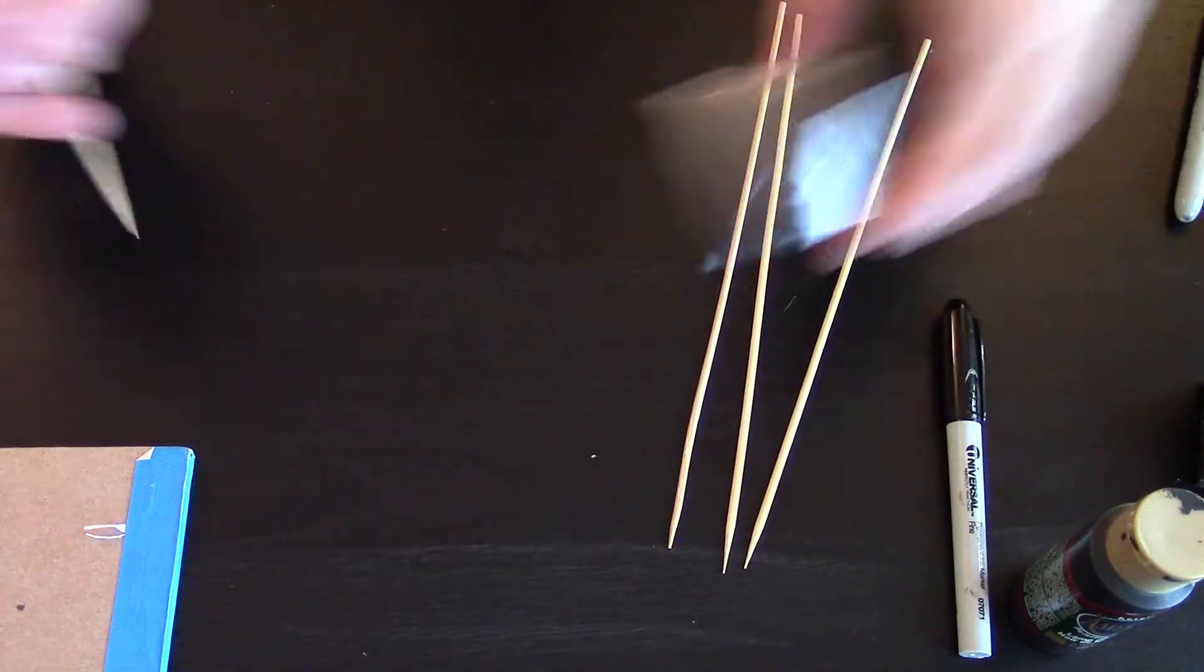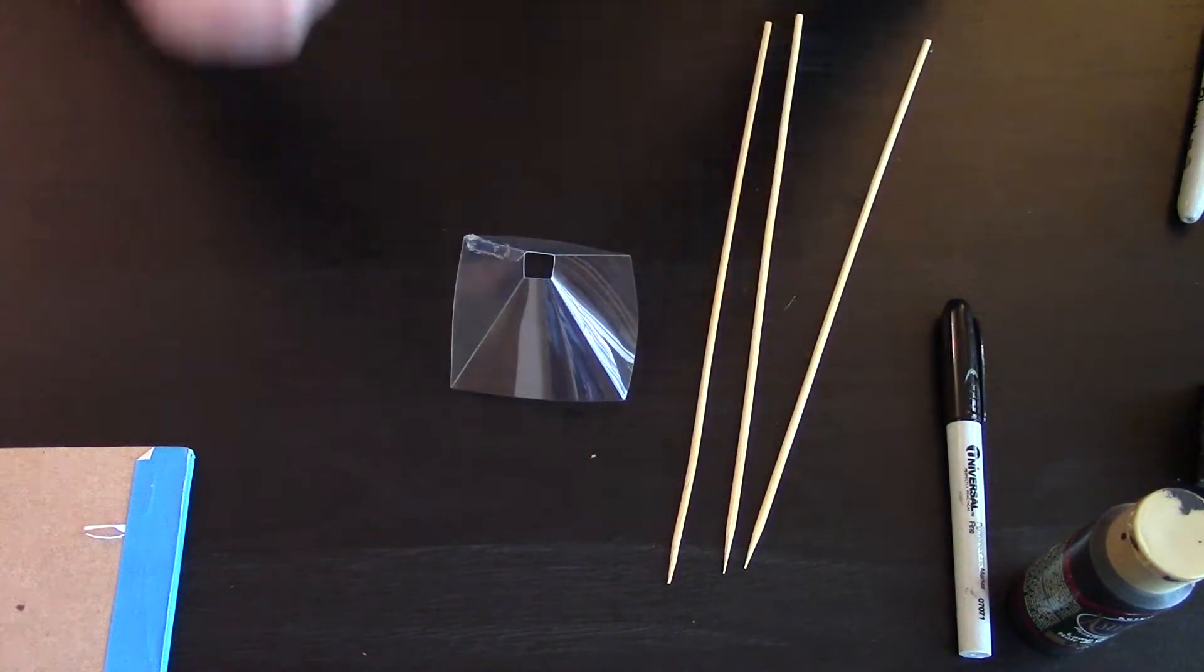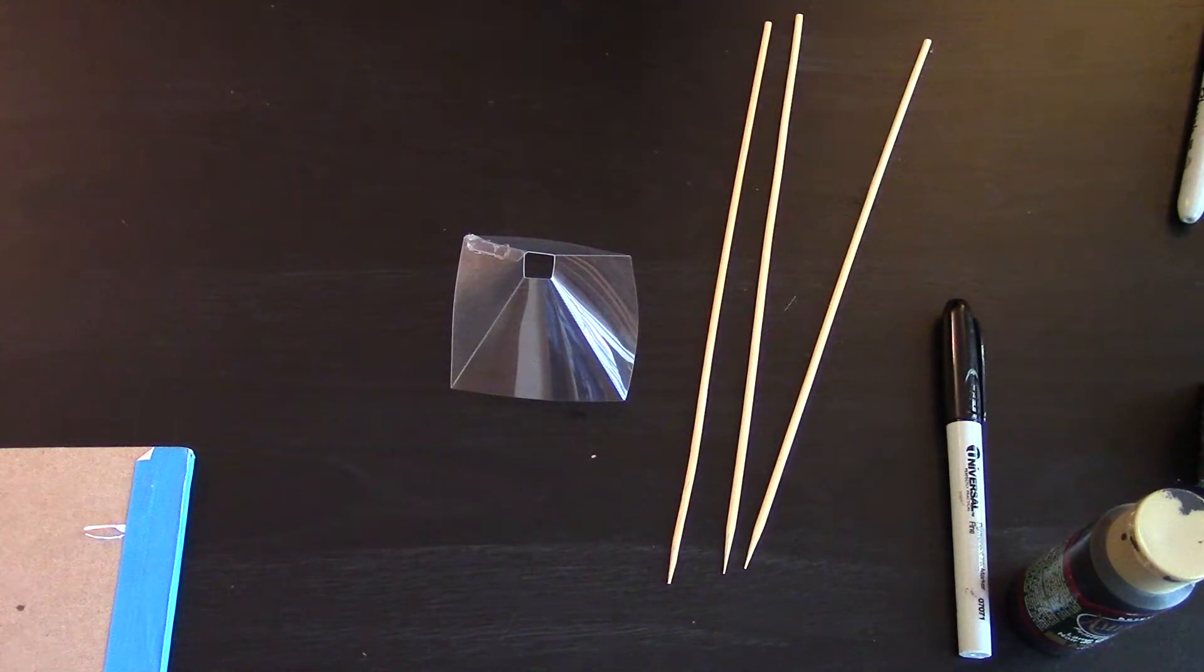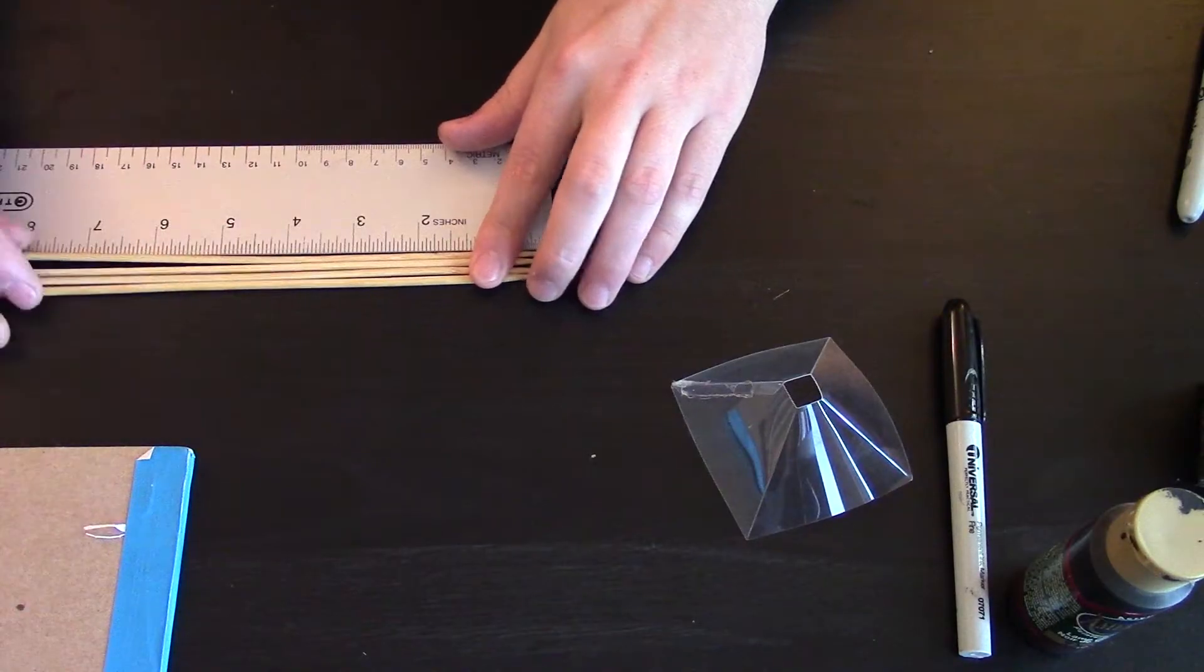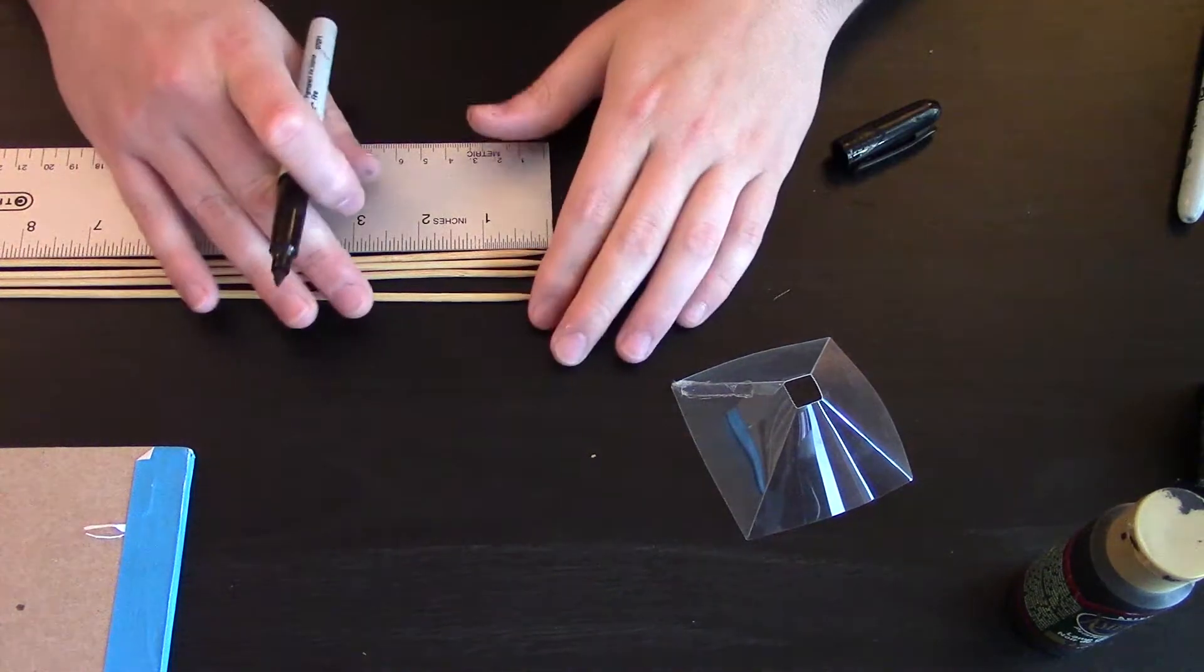I mean you can also gauge it based on your pyramid where it's going to be at, and that's generally about an inch and a half. Get them lined up as best I can here and then just do a quick marking on them.